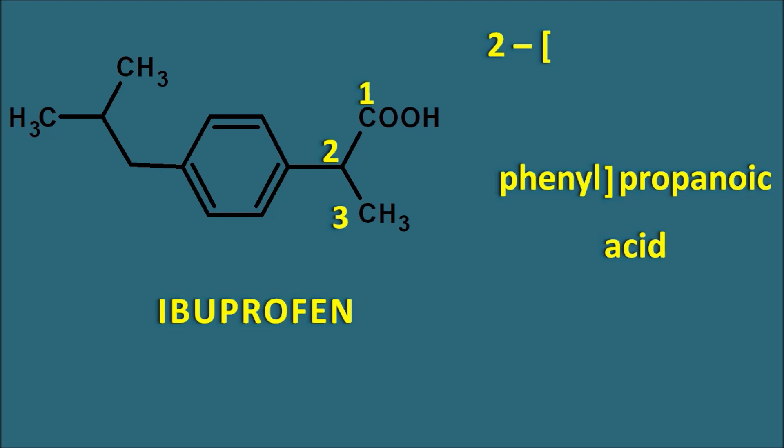Ibuprofen is a 2-phenyl propanoic acid derivative, and to this phenyl group at the para position one side chain is present. That side chain is the isobutyl side chain, which can also be written as 4-(2-methylpropyl). This 2-methylpropyl is nothing but the isobutyl group. That is why the name starts with the three letters IBU — IBU indicates that an isobutyl group is present. So ibuprofen is a 2-phenyl propanoic acid derivative having the isobutyl side chain at the fourth position.